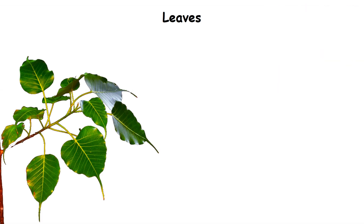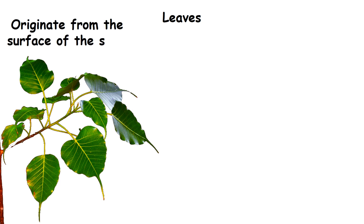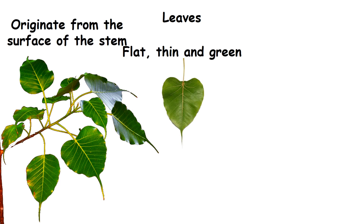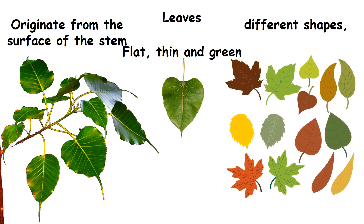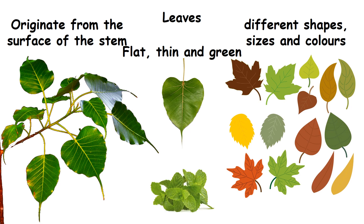Leaves. Leaves originate from the surface of the stem. They are flat, thin and green. Leaves of different plants have different shapes, sizes and colors. Some leaves have even a specific smell.